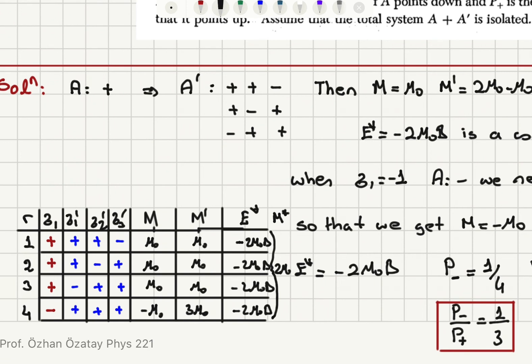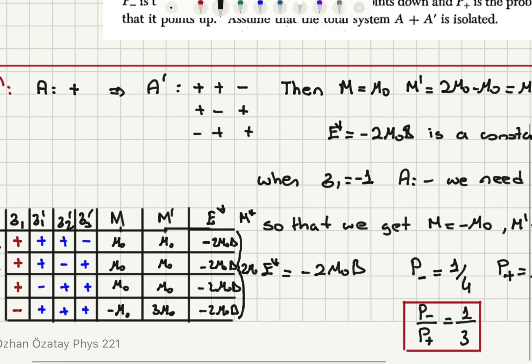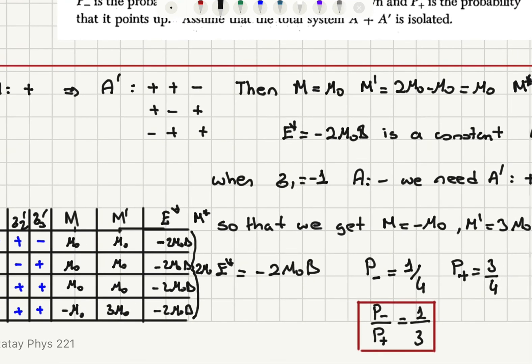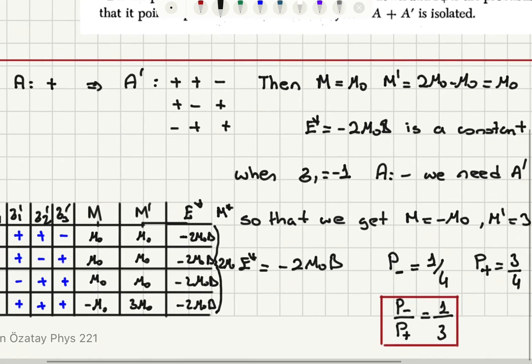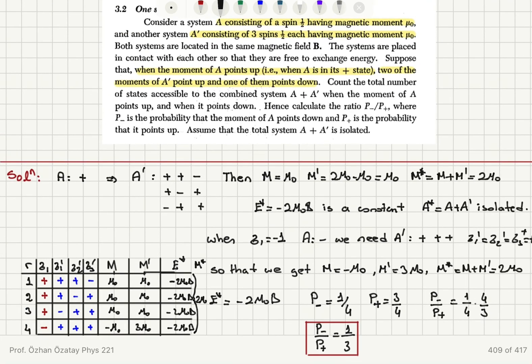When system A has a negative moment, minus mu zero, I need plus three mu zero in system A prime to get a total of plus two mu zero, so all moments in A prime must be up. When system A has an up moment, plus mu zero, to get two mu zero total I need plus mu zero in A prime, meaning one of the moments is down. For the sigma one equals minus one scenario the probability is one over four — one configuration out of four — and for the plus case it is three out of four, so the ratio p minus to p plus is one over three.